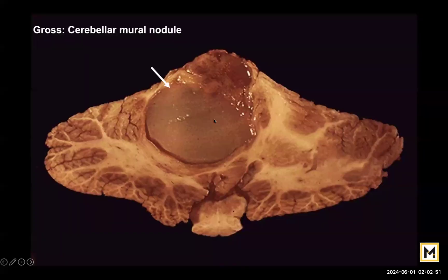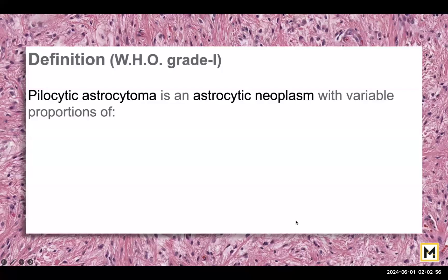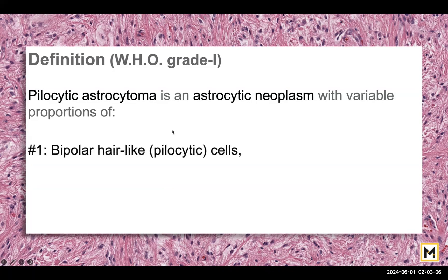On gross you will be able to see a cerebellar mural nodule. WHO defines it as a grade one tumor and it has four components that make the diagnostic hallmarks of this tumor. The first one being the presence of bipolar hair-like processes. The hair is the reason why it's called pilocytic — pilos means hair.